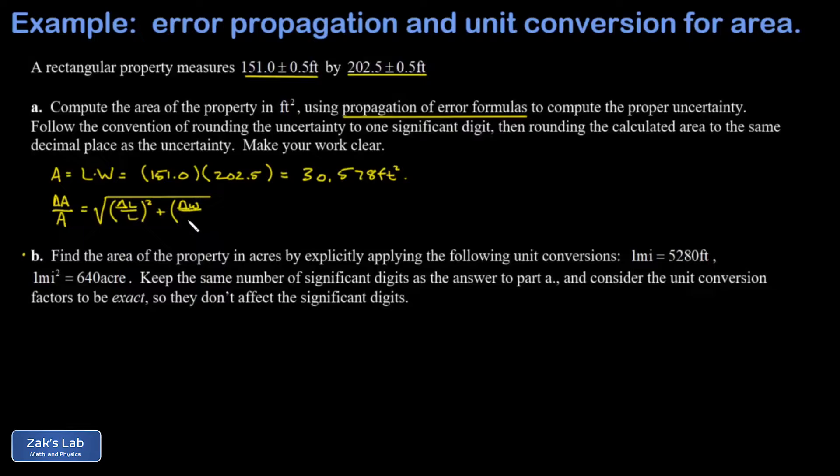And a similar term for W, the width. So we plug the numbers in there. And when I plug into my calculator, I end up with 0.00413, just keeping a few significant digits there. Now this is the relative uncertainty in A. In other words, this tells us what the percent uncertainty is in the area. And it's about 0.4% if I were to convert that to a percent.